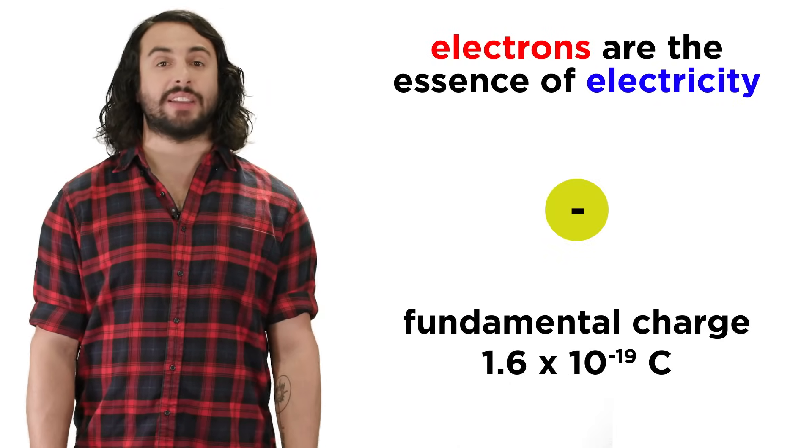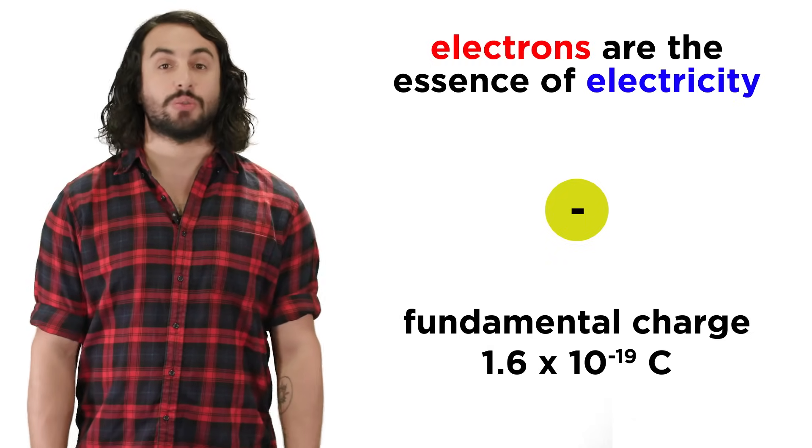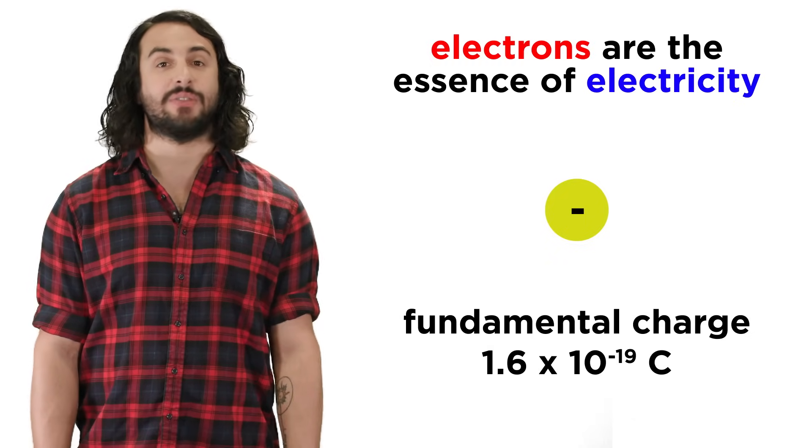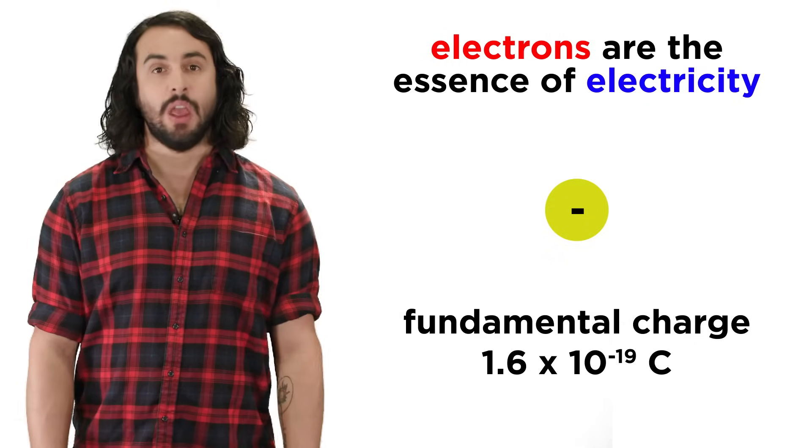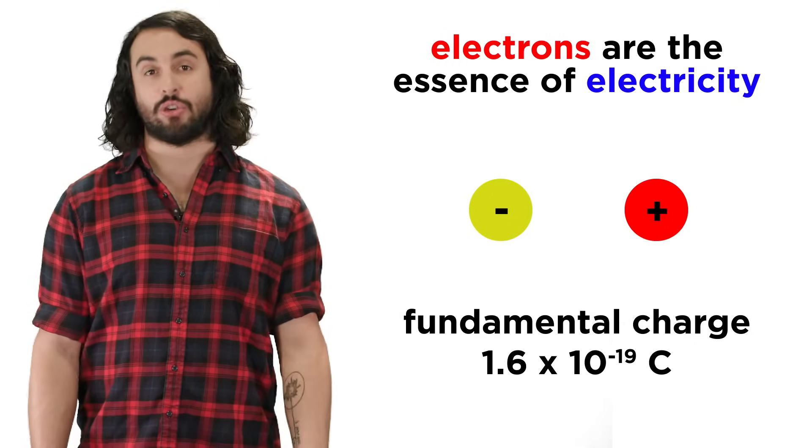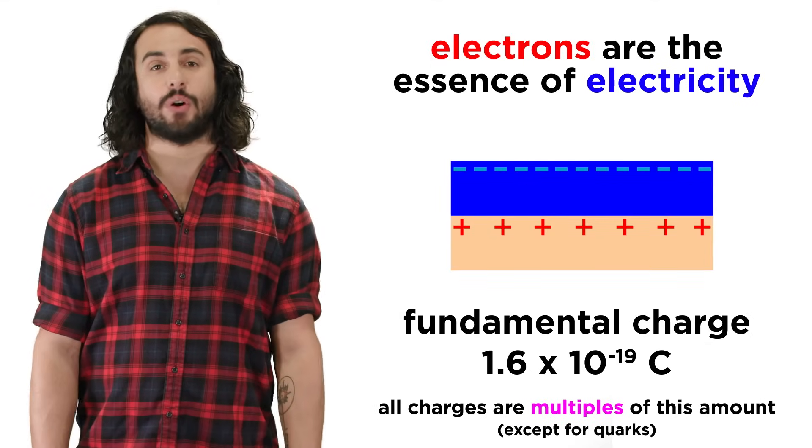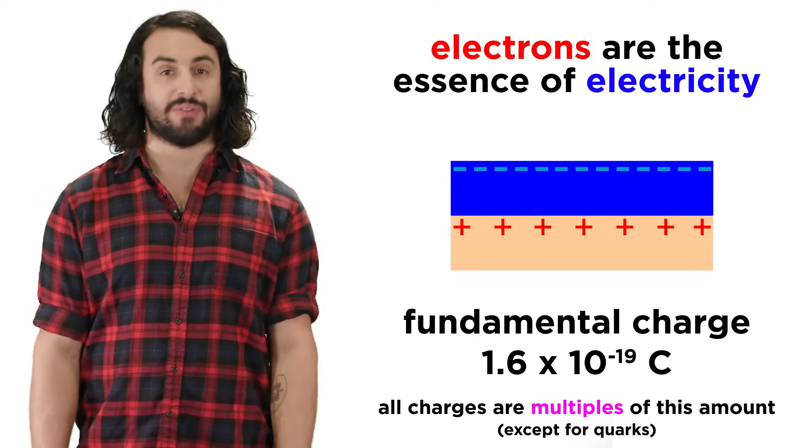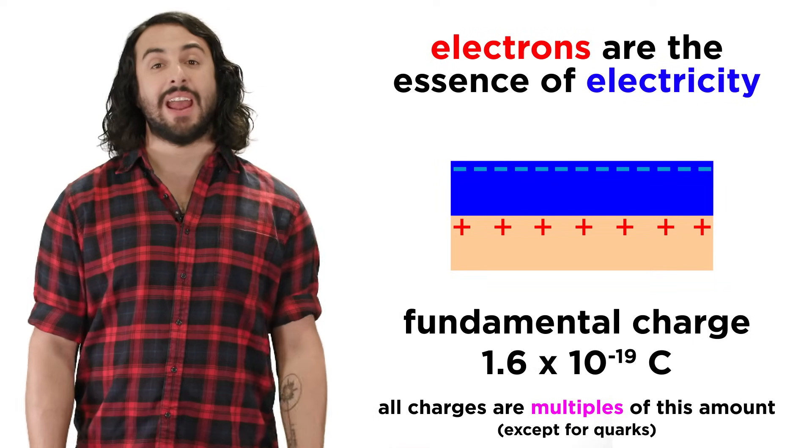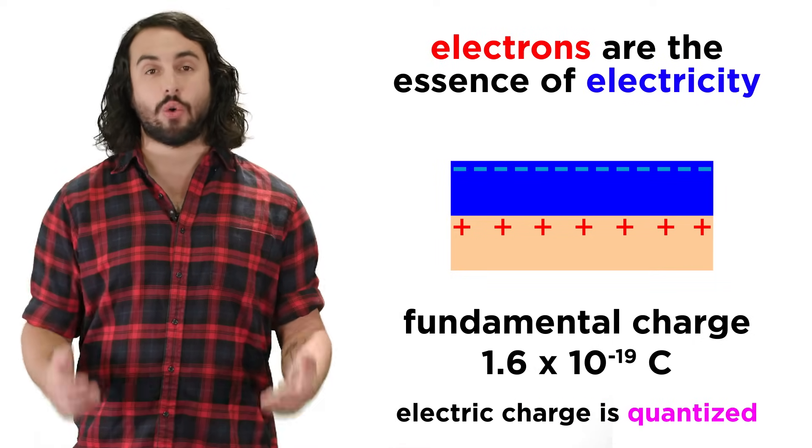Each electron carries with it the fundamental charge, which is 1.6 times 10 to the negative 19 coulombs. This magnitude is negative for the electron and positive for the proton. All substances will therefore have a charge that is some multiple of this amount. That is to say, electric charge is quantized.